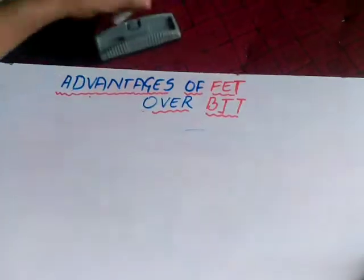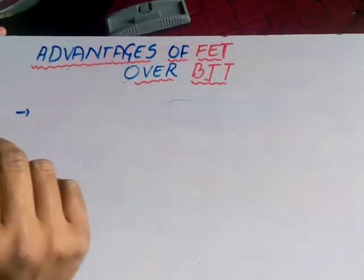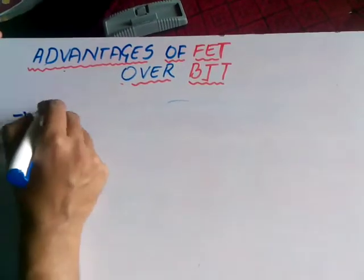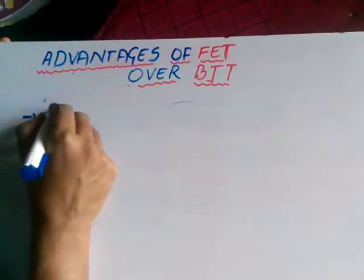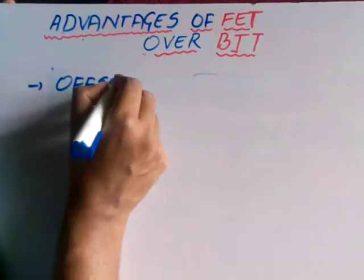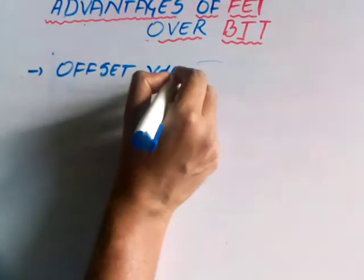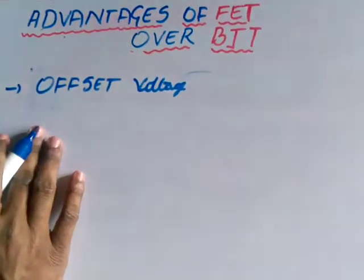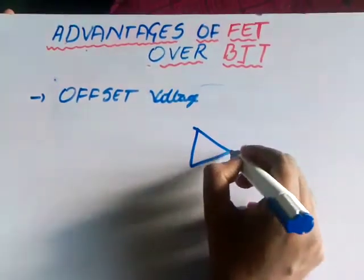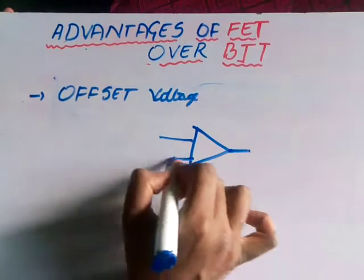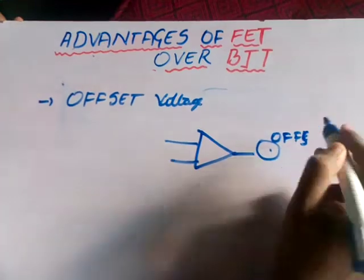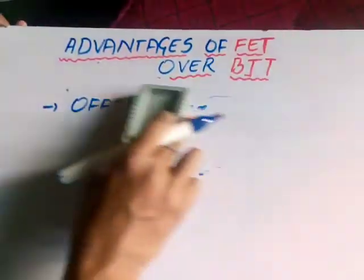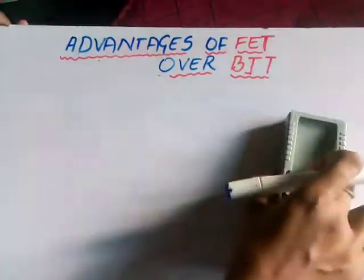The second important advantage is there is a voltage called offset voltage. I hope you have seen in op amps — sometimes you get an output voltage without giving any input. This output voltage is called offset voltage. This is absolutely unwanted for an engineer. In order to avoid this, we use FETs. That is, field effect transistors can nullify the offset voltage value.